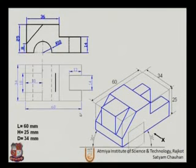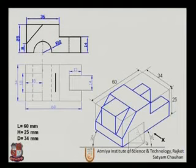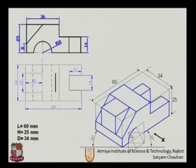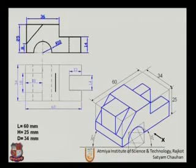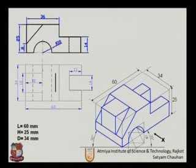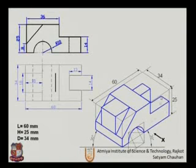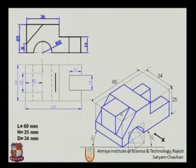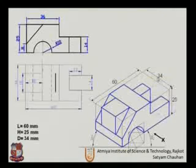To draw the semicircular part, we use the rectangle method. We join the midpoints from the nearest, smaller diagonal and complete the half circle. Since it is an isometric view, we draw parallel lines from this semicircle to give it a 3D appearance. That completes the isometric view of that figure.